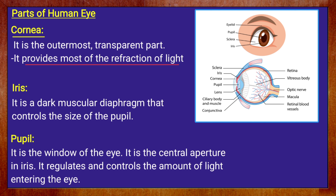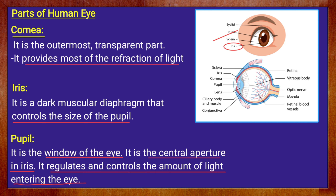The second important part is the iris — a dark muscular diaphragm that controls the size of the pupil. The pupil is the window of the eye where light enters; it is the central aperture in the iris. The role of the pupil is to regulate and control the amount of light entering the eye — whether we are present in a dark room or a lighted room, it controls how much light enters.